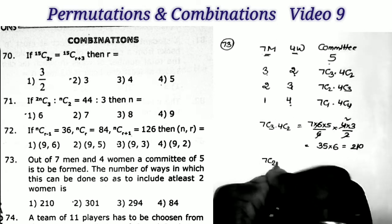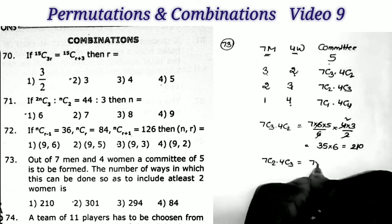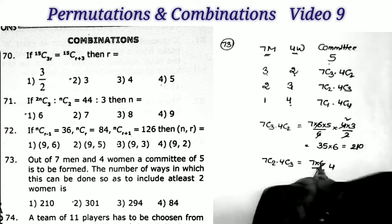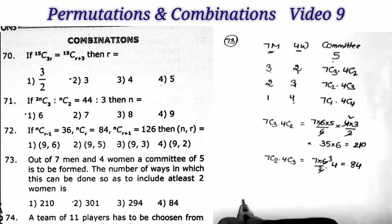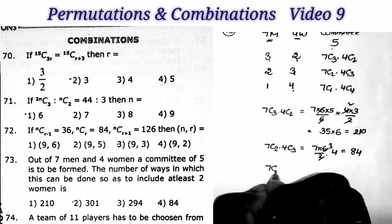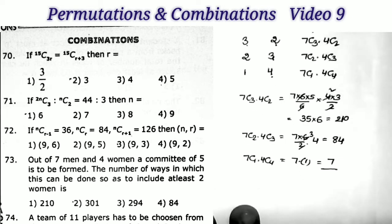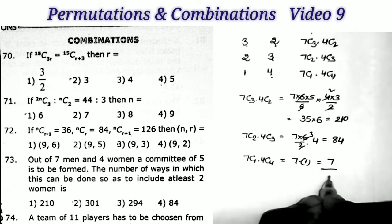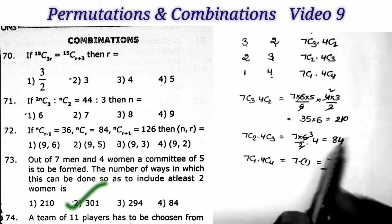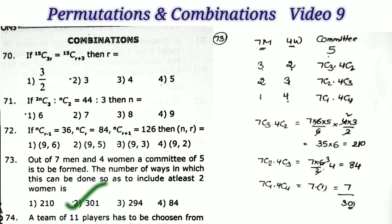Adding all values: 210 + 84 + 7 = 301. This equals 294 + 7 = 301, and that is the second option.